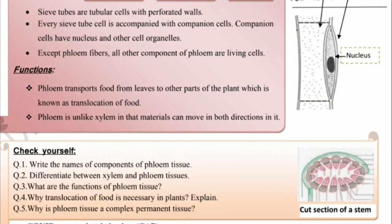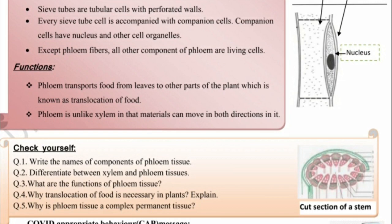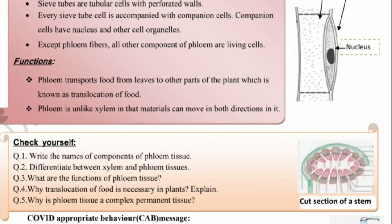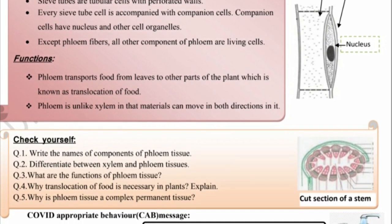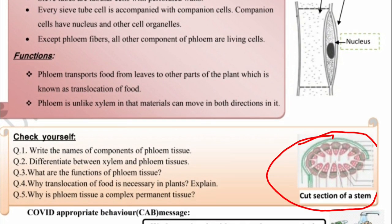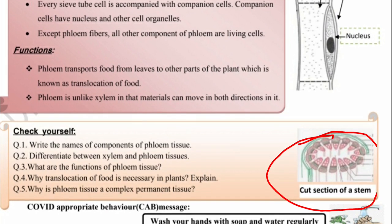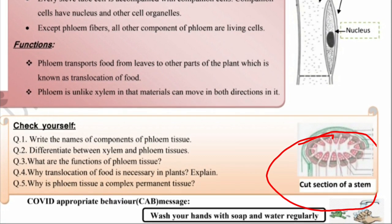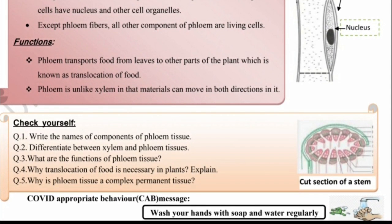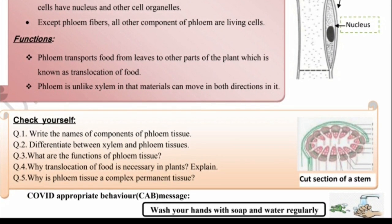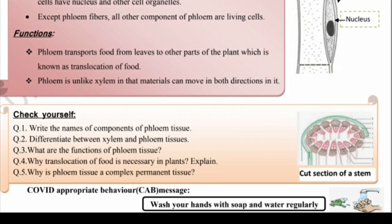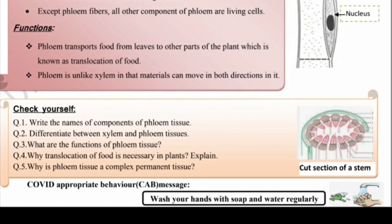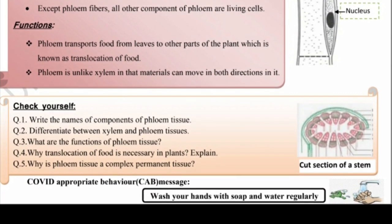Here you can see the cross-section of a stem. In it, the inner side has phloem and the outer side has xylem. These are called conductive tissues. Together they are also referred to as vascular bundles.